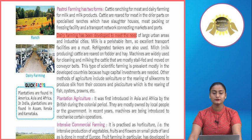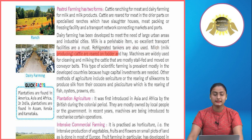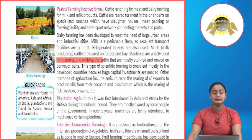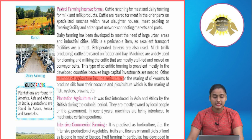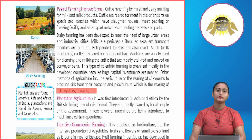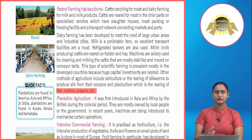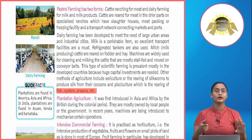Dairy farming has been developed to meet the needs of large urban areas and industrial cities. Milk is a perishable item, so excellent transport facilities are a must. Refrigerated tankers are used. Milk-producing cattle are reared on fodder and hay. Machines are widely used for cleaning and milking cattle that are mostly stall-fed and moved on conveyor belts. This scientific farming is prevalent mostly in developed countries because huge capital investments are needed. Other methods include sericulture — rearing of silkworms to produce silk from their cocoons — and pisciculture, which is the rearing of fish, oysters, and prawns.